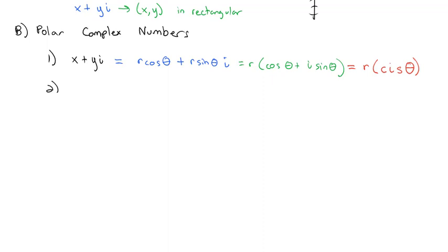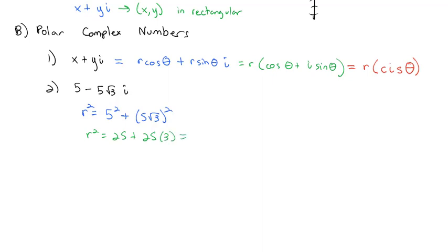For example, if we have the complex number 5 minus 5√3 i, we can convert it to polar form by identifying r and theta. The radius: r squared equals 5 squared plus (5√3) squared, which gives r squared equals 25 plus 75, or 100. Taking the square root, the radius r equals 10.